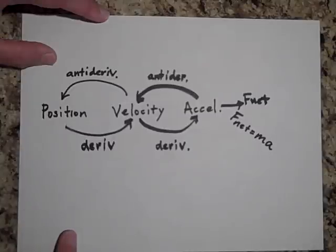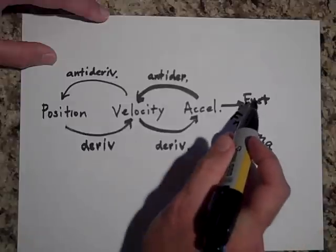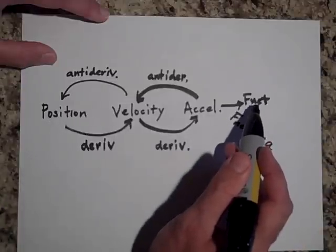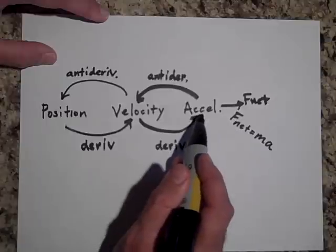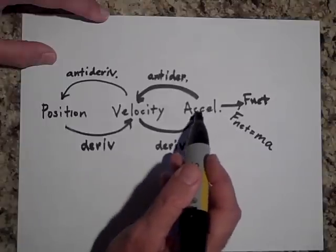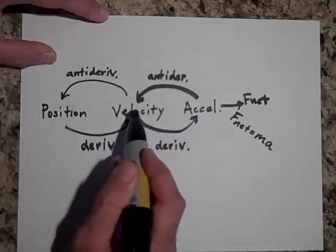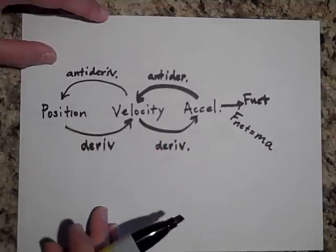So if we're given the net force on an object and say we want to get the position, what we would do is take the F net, divide by the mass to get the acceleration. Then we would take the acceleration and take the antiderivative of it to get the velocity. Then we take the antiderivative one more time and get the position.